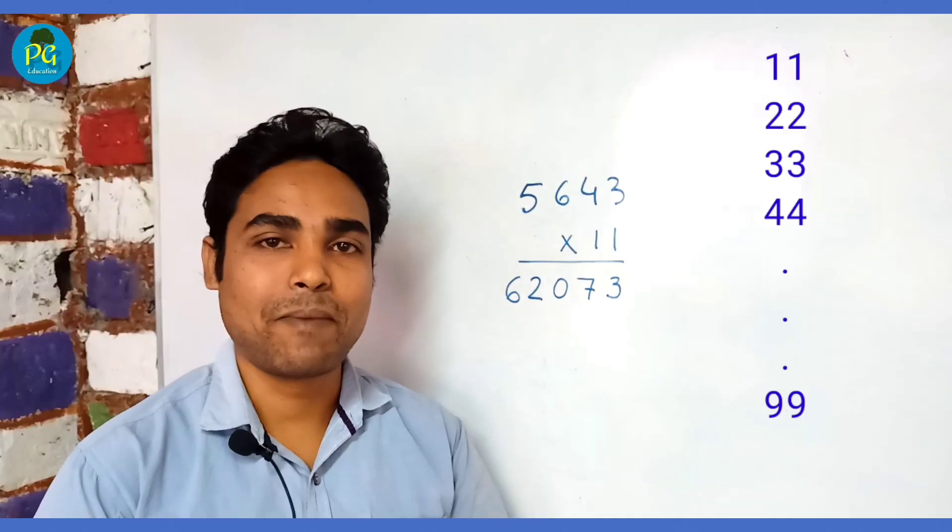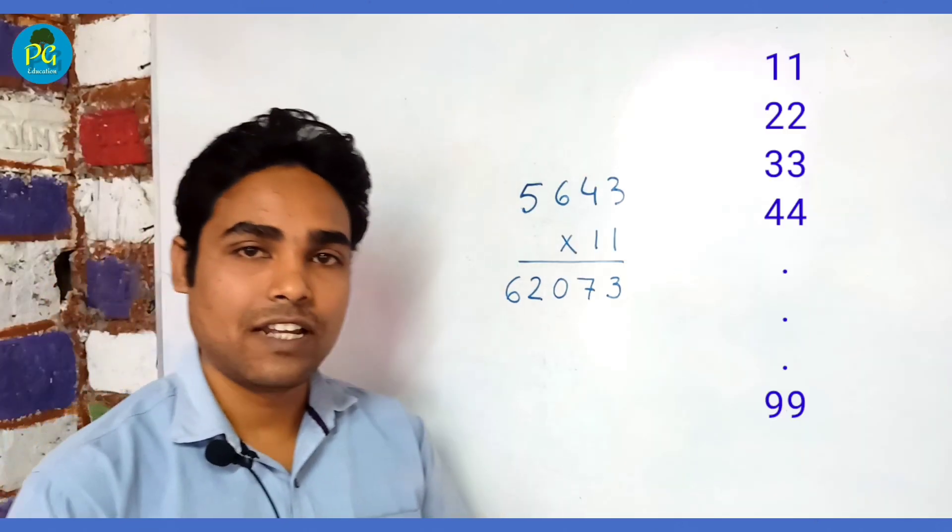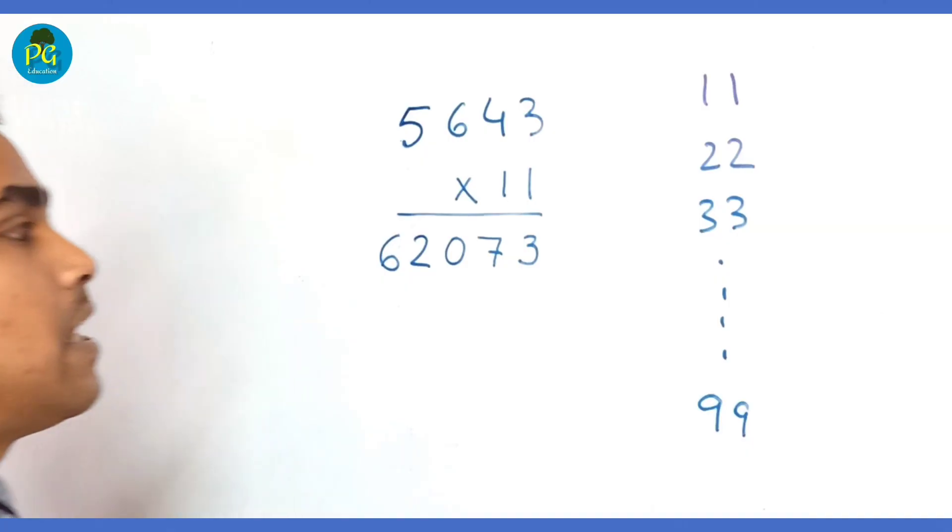this number by any of the multiples up to 99, then how can we multiply? Let us take 33.